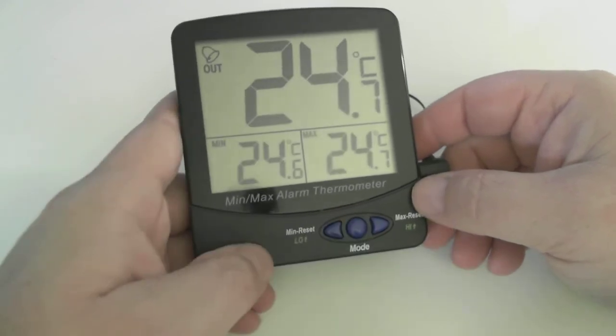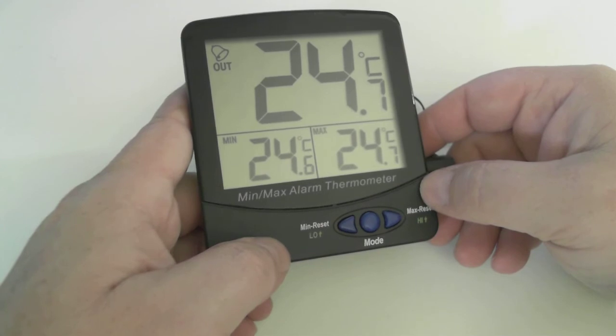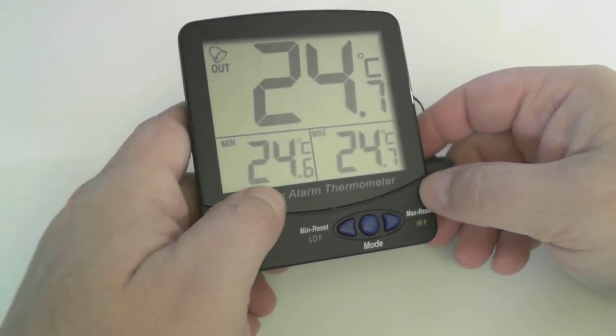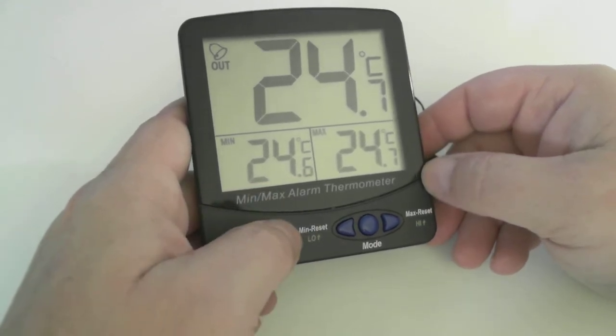Let's go back to the mode button, back to the main current min-max screen. And you notice that the minimum temperature has changed from 24.7, which was when we turned it on, to 0.6. If you want to reset that, you just hit the min-reset.